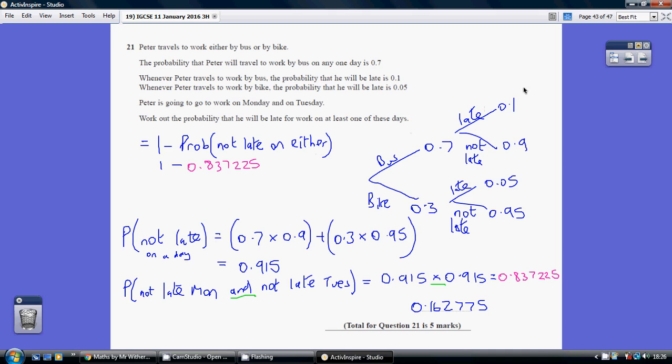So, let's just have a look on any single day. On any single day, bus travel is a 0.7 likelihood, so bike is 0.3. Now, when he travels by bus, he is late on 0.1 occasions, so not late on 0.9. When he goes by bike, he is late on 0.05, not late therefore 0.95.